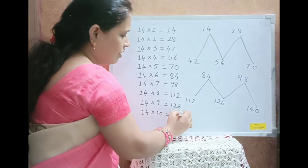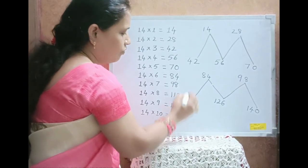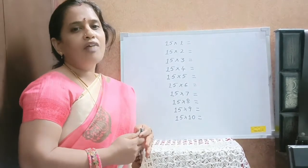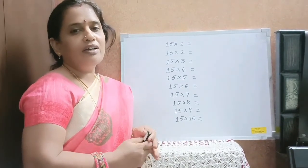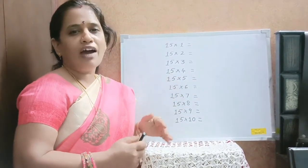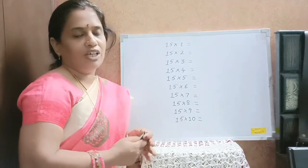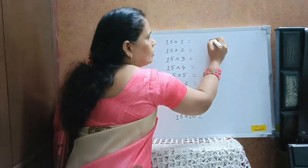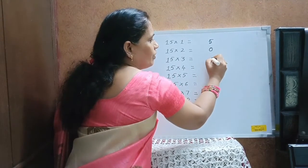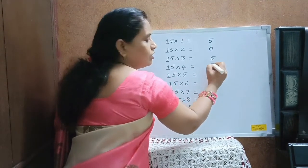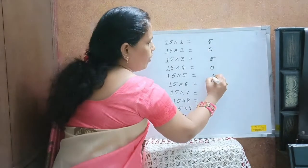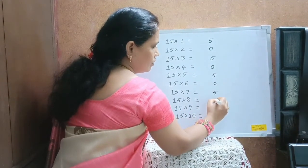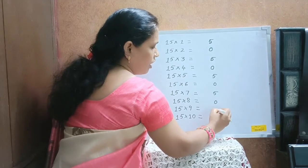For the table of 15, we have to write the unit digits: 5, 5, 0, 5, 0, 5, 0, 5, 0, 5, 0.